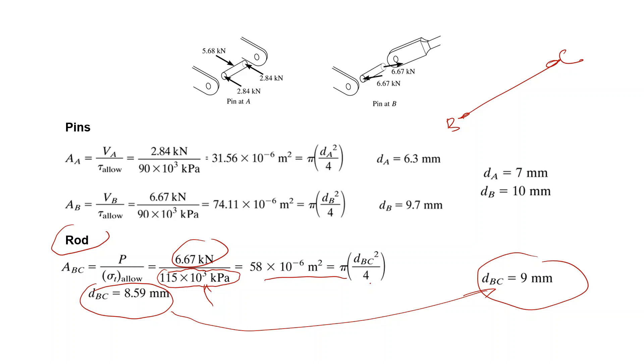So we actually made a very simple design. The load and the geometry was given, the materials were also given, and we were asked to determine some dimensions: here the pin diameters, here the rod diameter. With the help of our calculations we finished this simple design.